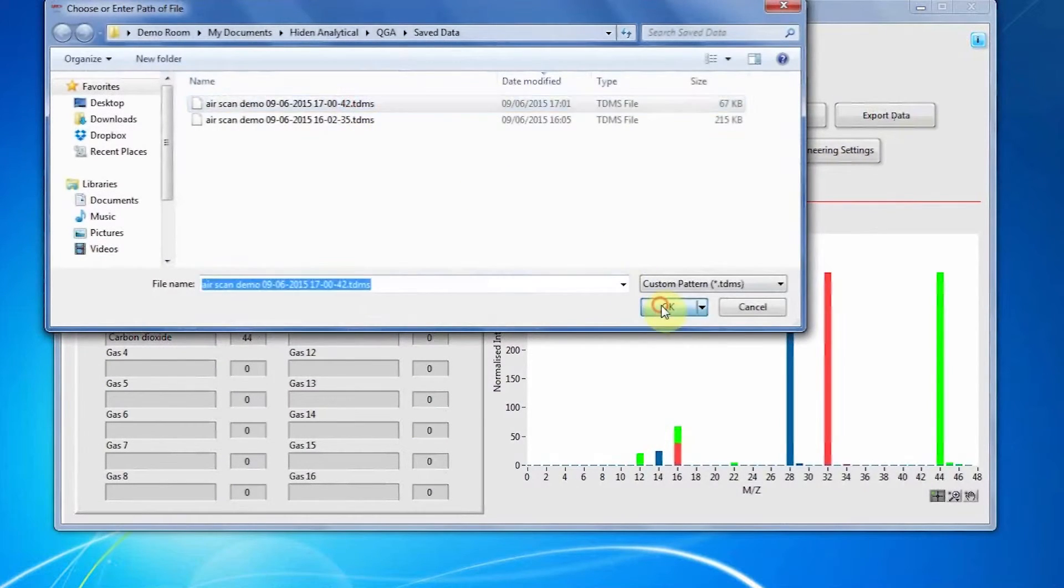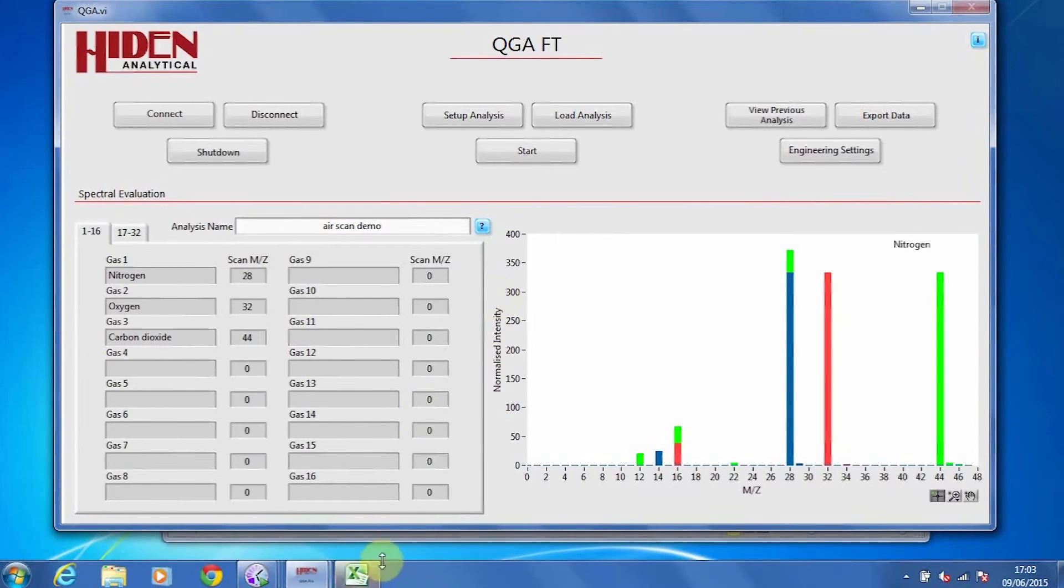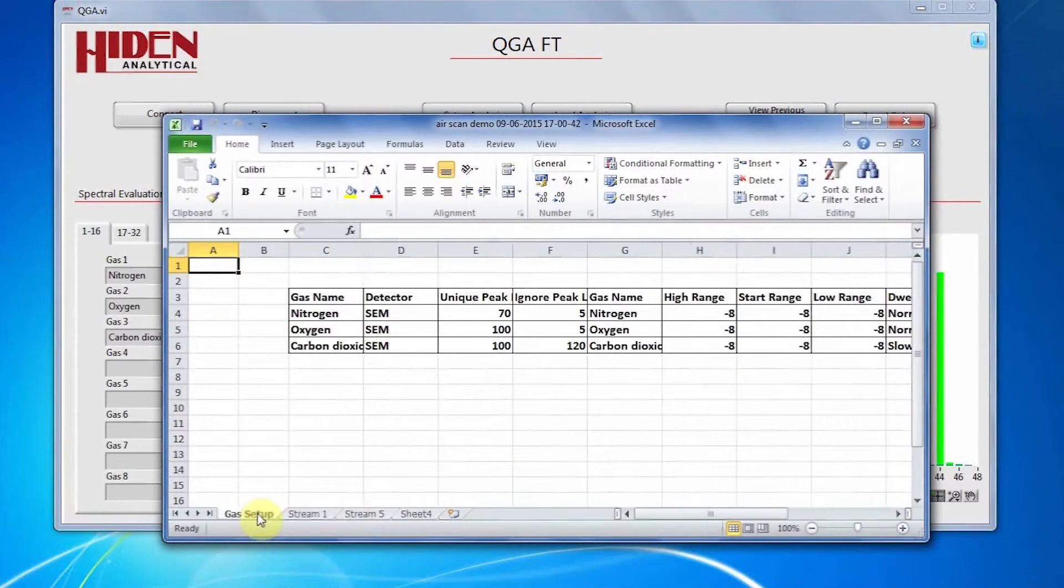The great benefit of the QGA is the number of gases that it can analyze at any one time. A user can select, for example, hydrogen, H2S, oxygen, nitrogen, or a whole range of mixtures, and the onboard spectral evaluator automatically deconvolutes the spectrum and selects the optimum peaks for the analysis.